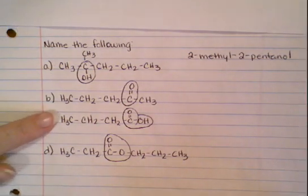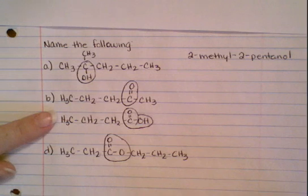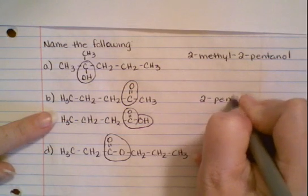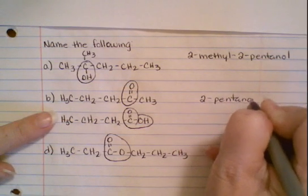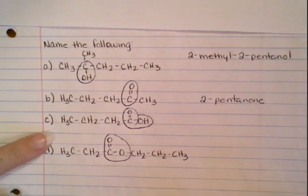On B, we have a C double bond O bonded to a CH3. So what functional group is that? You might need to look it up, but once you figure out what it is, then you can name this accordingly. This will be 2-pentanone.